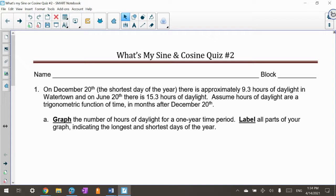This one is on December 20th, the shortest day of the year. There's approximately 9.3 hours of daylight in Watertown, and on June 20th there's 15.3 hours of daylight. Assuming hours of daylight are a trigonometric function of time in months after December 20th, I want you to graph the number of hours of daylight for a one-year period. Label all parts of your graph indicating the longest and the shortest days of the year.